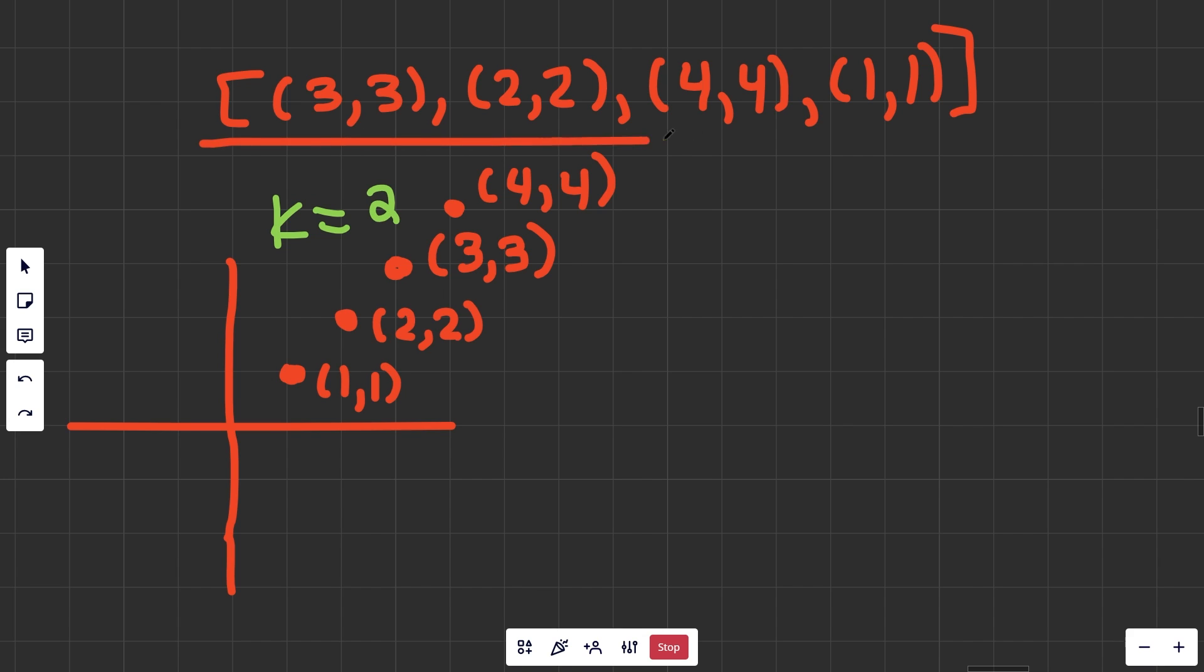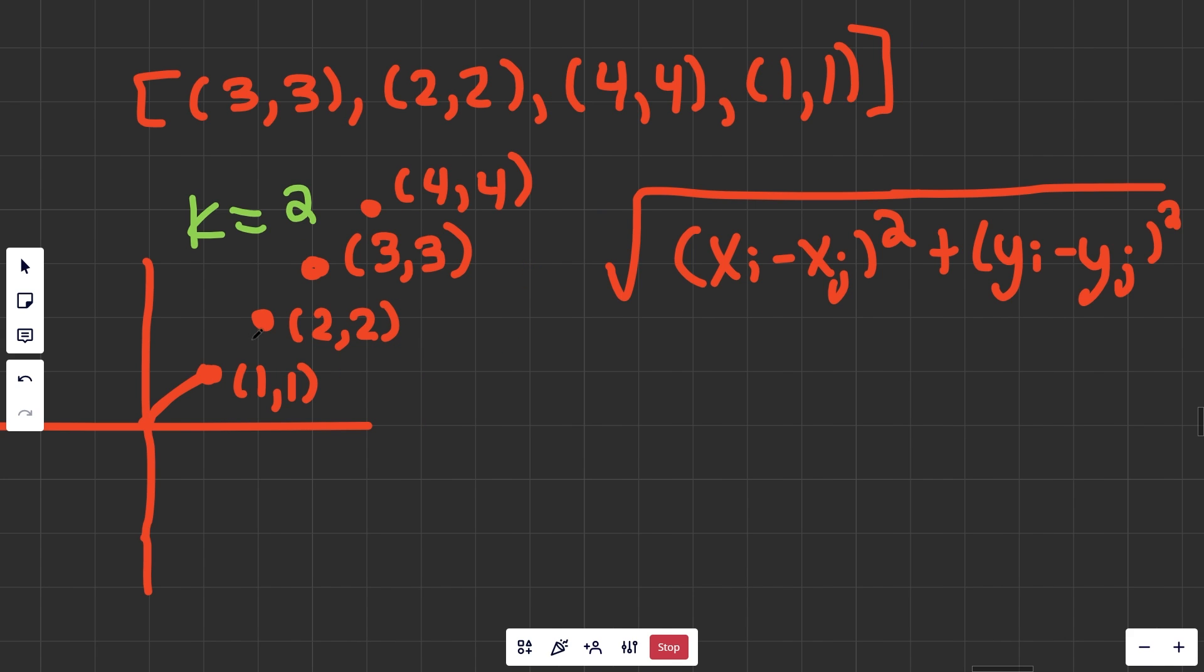Suppose we were given this array of points, and I drew them on the graph over here. We made very simple points: (1, 1), (2, 2), (3, 3), and (4, 4). We also have k equals 2. So we want the k equals 2 closest points to the origin, which we know is going to be this point and this point. Regardless of what formula we use, we definitely want to compute the distance between all of the points and the origin, so that we can compare them.